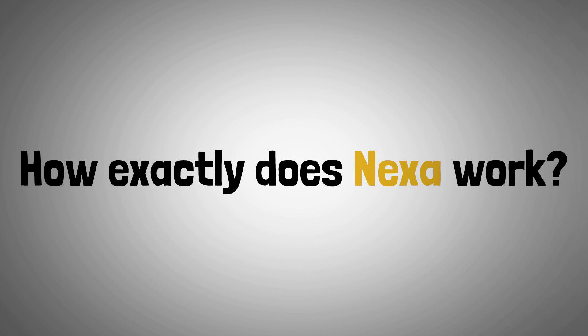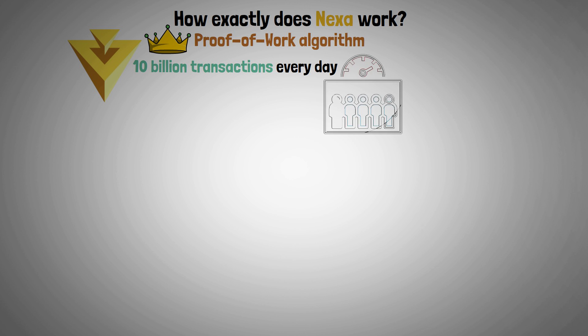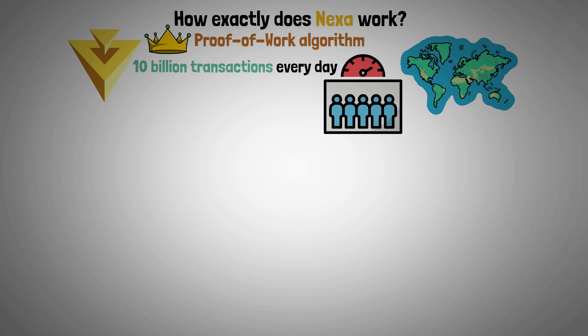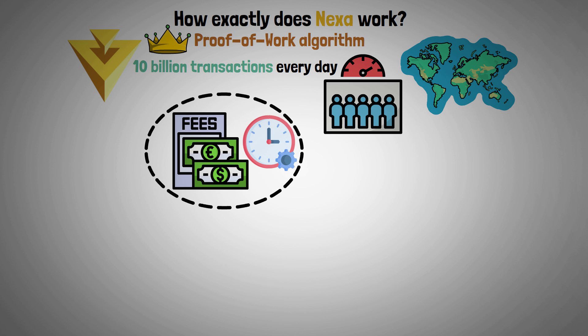Let's examine how exactly Nexa works. Because of its special proof-of-work algorithm, Nexa can handle up to 10 billion transactions every day, which is enough capacity for the whole planet. This eliminates the need to pay expensive fees and wait for transaction confirmation.